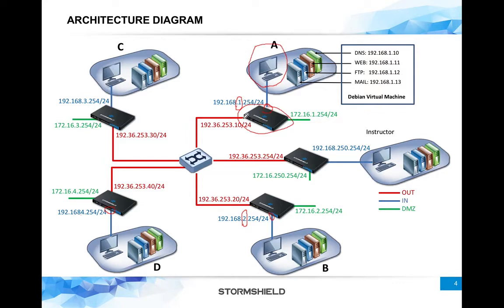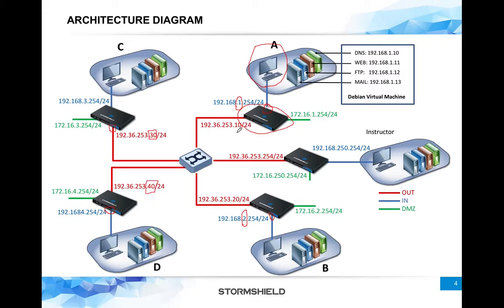On the external side of the firewall, shown as the red line, each company has a public IP address. For example, company C is 192.36.253.30, company D is .40, company A is .10, and company B is .20.